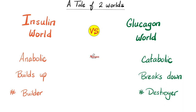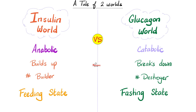Why does insulin build up? Because you are in the feeding state — you just ate. It's time to build and save for a rainy day. Why does glucagon break down? Because you're fasting — you're not eating. Let me break down glycogen into glucose to supply you with energy; otherwise you'll starve.